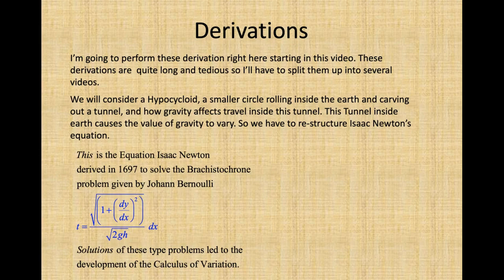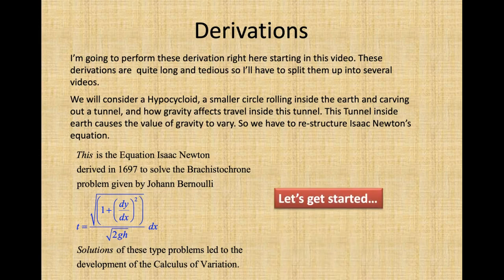This is the equation Isaac Newton derived in 1697 to solve the Brachistochrone problem given by Johann Bernoulli. Solutions of these type problems led to the development of the calculus of variation. Let's get started.